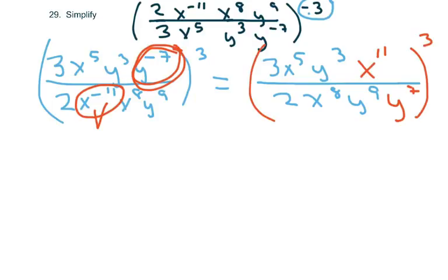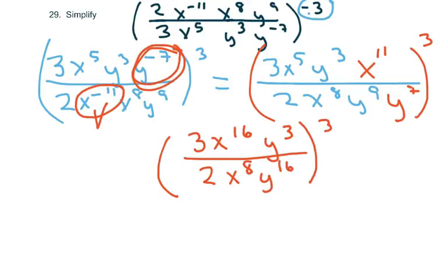Now I'm going to clean up my numerator, and that's going to be 3x to the 16th times y to the 3rd over 2x to the 8th, y to the 16th, to the 3rd.